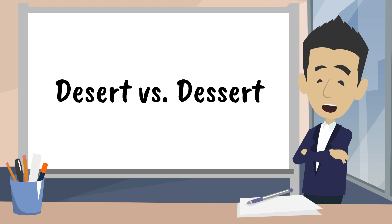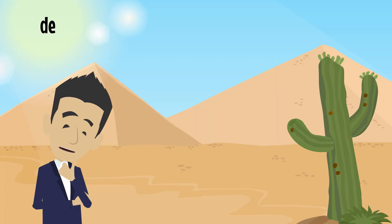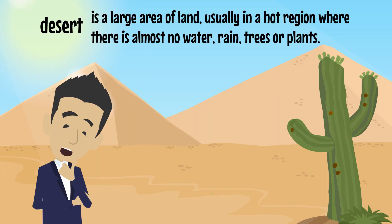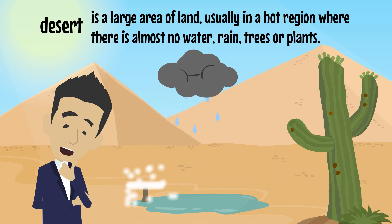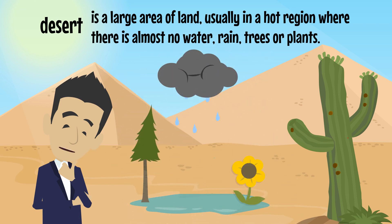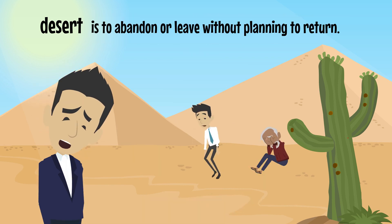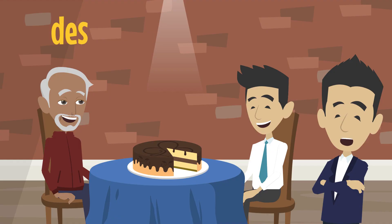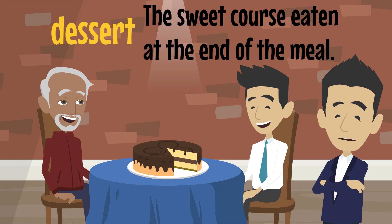They are spelled and pronounced the same or nearly the same, but have different meanings. A desert is a large area of land, usually in a hot region, where there is almost no water, rain, trees, or plants. To desert is to abandon or leave without planning to return. Dessert is the sweet course eaten at the end of a meal.